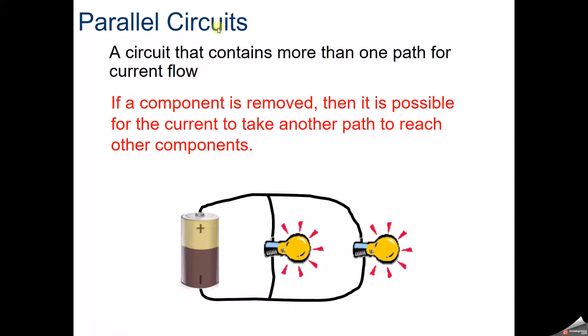Today in this video we're going to talk about parallel circuits. It's a circuit that contains more than one path for the current to flow. If a component is removed, it is possible for the current to take another path to reach the other components. So if we remove this light bulb, there is still a path from positive to negative for the current to flow, so that light will still stay illuminated.